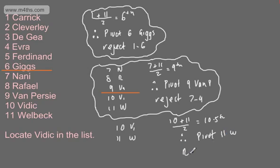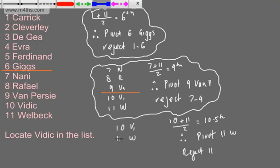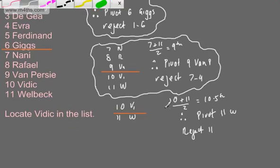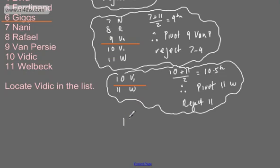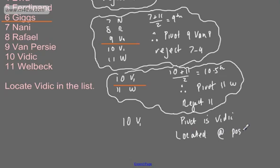So what we can now say is we're going to reject 11. We've got our list and we're going to locate the next pivot. Each time we do this, it's carrying out what we call one iteration. Now what we've got in our list is just position 10, which is Vidic. We can say that the pivot is Vidic and therefore we have found him - located at position 10.